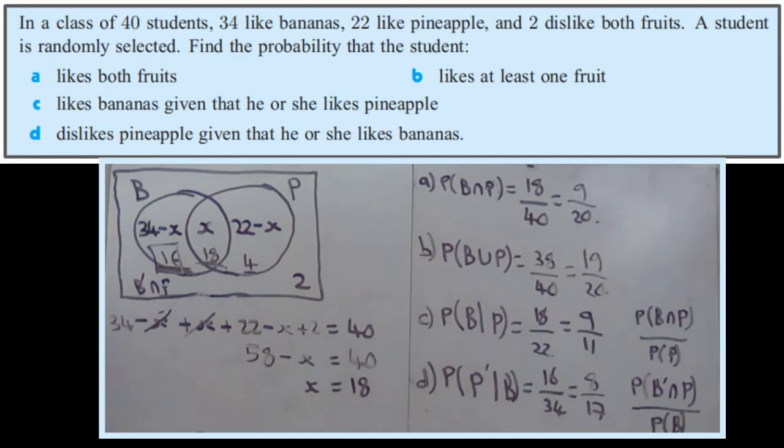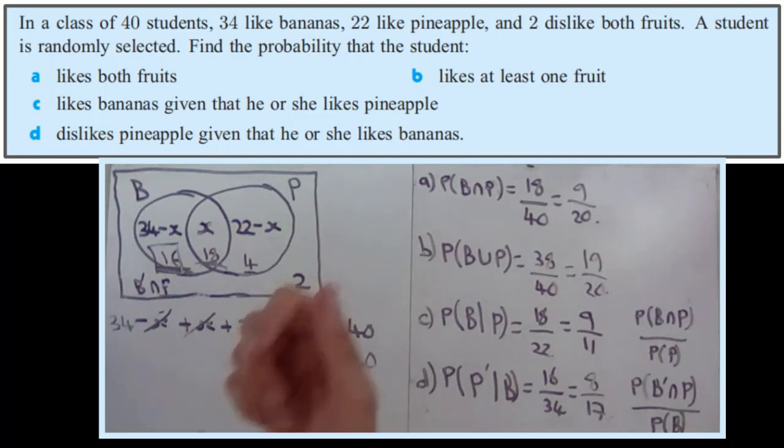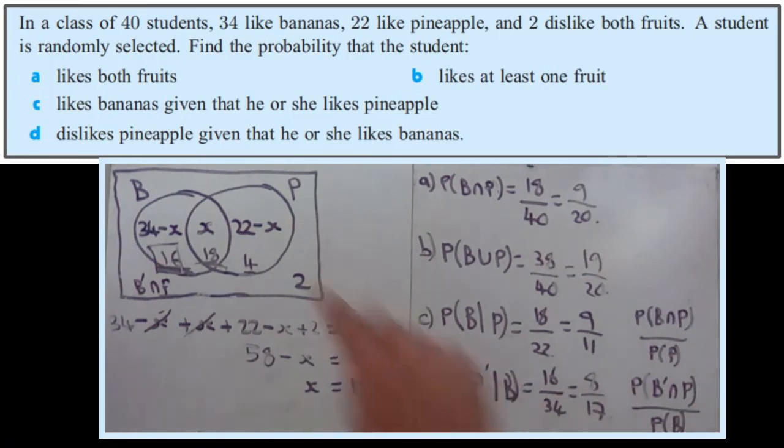Which again, I don't have space, but it would have been 16 over 40 divided by just bananas, which was 34 over 40, which would still give you 16 over 34.